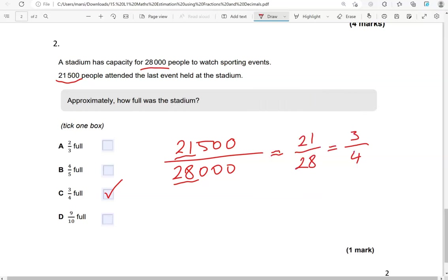Or you could look at 28,000, what's half of it, that's 14,000, and work it out that way, that it is 3 quarters. Or finally, you could have a look at these fractions, so 2 thirds. What is 2 thirds of 28,000? Is that 21,500 approximately? Then go to 4 fifths, 3 quarters, 9 tenths.